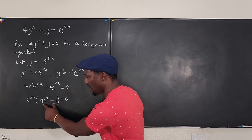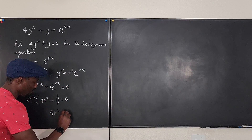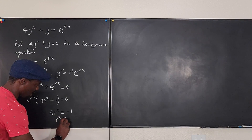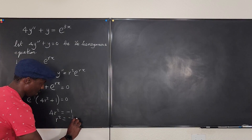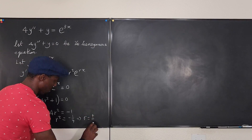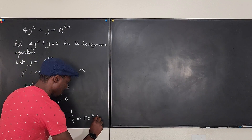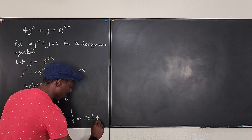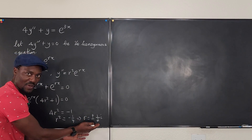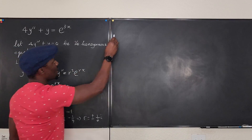Solving 4r² + 1 = 0 gives 4r² = −1, so r² = −1/4, which implies r = ±(1/2)i — a plus-or-minus imaginary number.